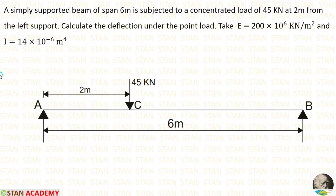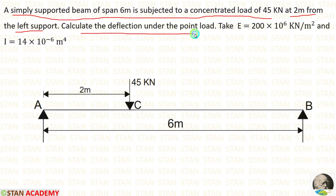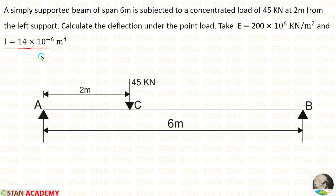Hello everyone, today we are going to do a problem based on strain energy. Let us read the question: A simply supported beam of span 6 m is subjected to a concentrated load of 45 kN at 2 m from the left support. Calculate the deflection under the point load. Take Young's modulus E = 200 × 10⁶ kN/m² and moment of inertia I = 14 × 10⁻⁶ m⁴.